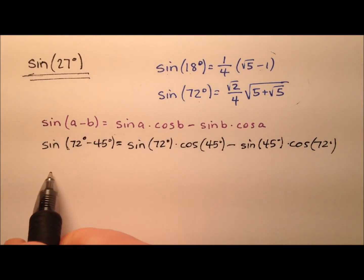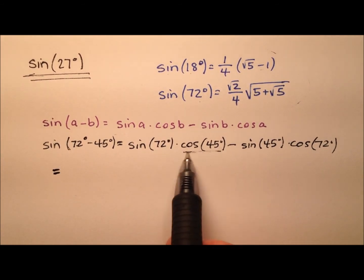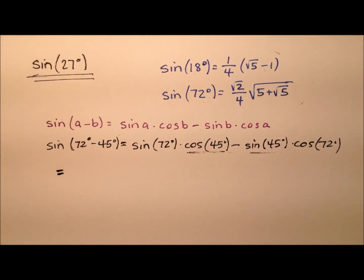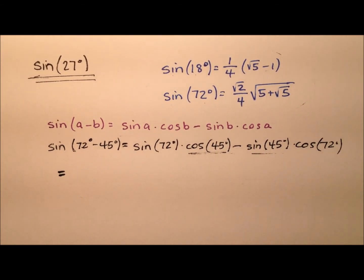Now, a couple of these—the cosine of 45 and the sine of 45—are really easy. They're actually both the same, the square root of 2 over 2. But we have the sine of 72 and the cosine of 72 to contend with.